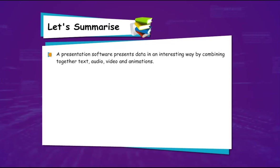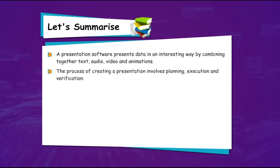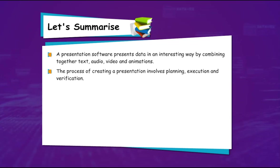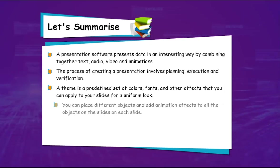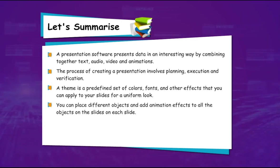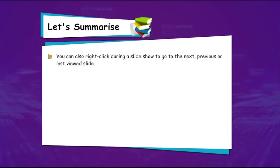Let's summarize: A presentation software presents data in an interesting way by combining text, audio, video, and animations. The process of creating a presentation involves planning, execution, and verification. A theme is a predefined set of colors, fonts, and other effects that you can apply to your slides for a uniform look. You can place different objects and add animation effects to all objects on the slides. The slideshow displays all slides in a presentation one by one in full screen. You can also right-click during a slideshow to go to the next, previous, or last viewed slide.